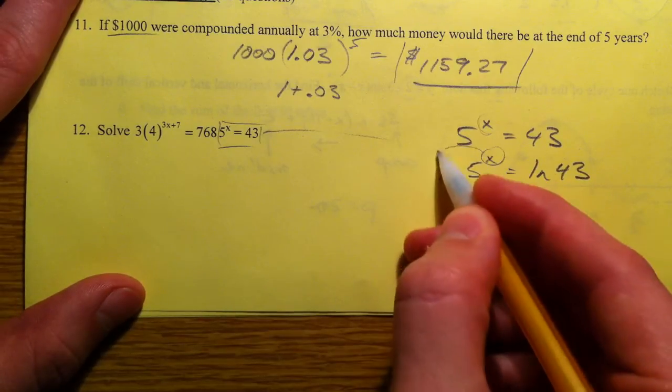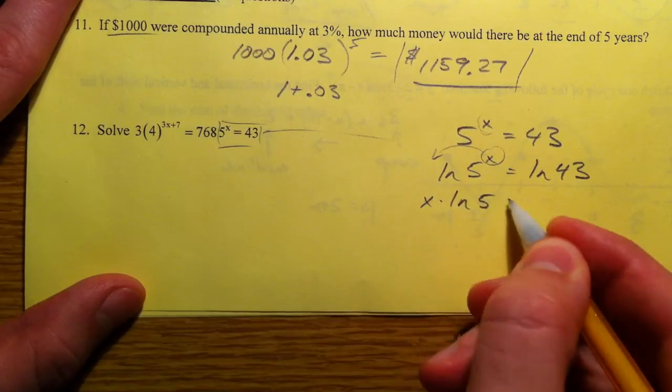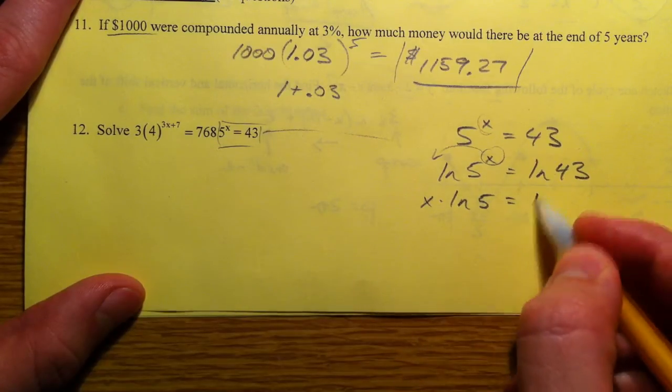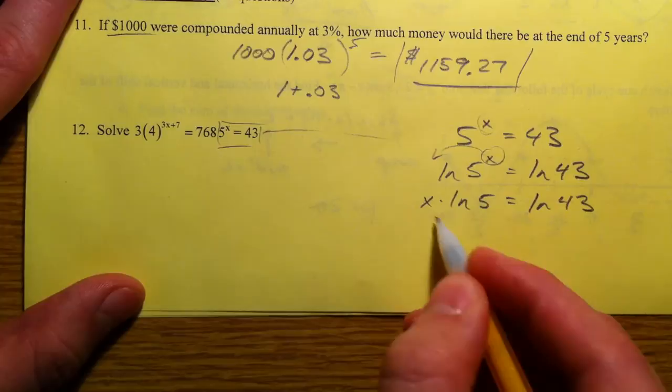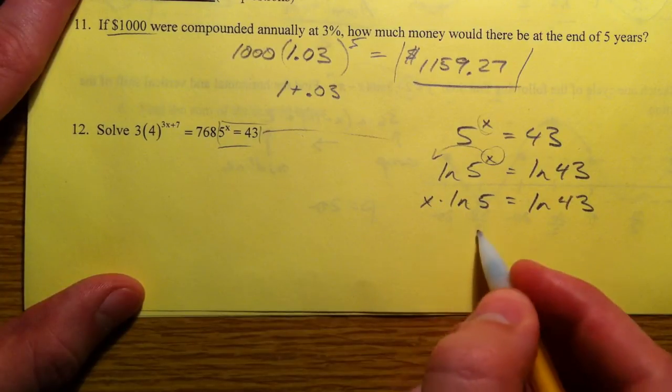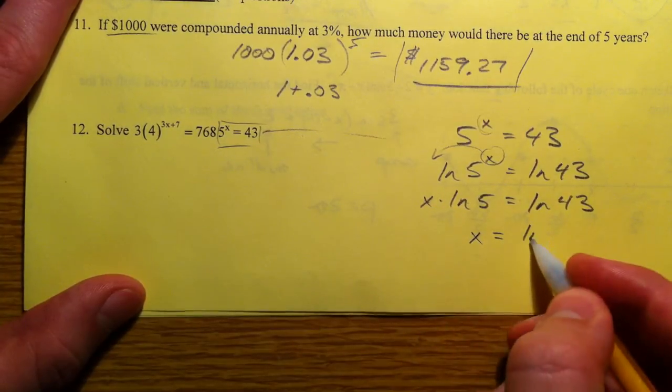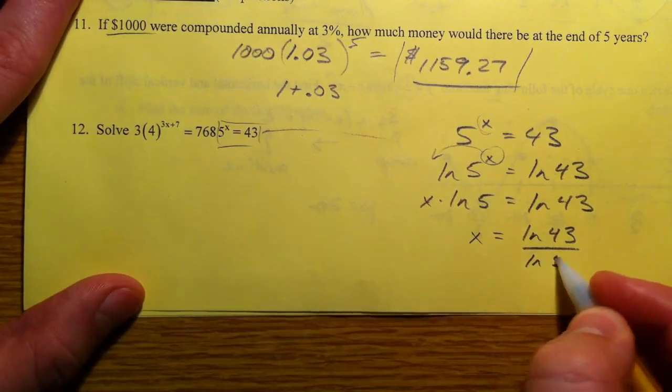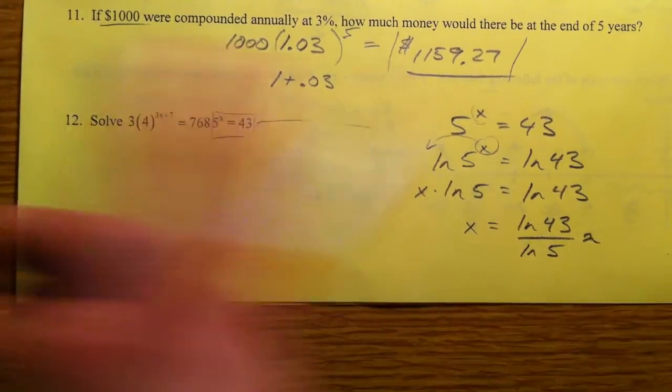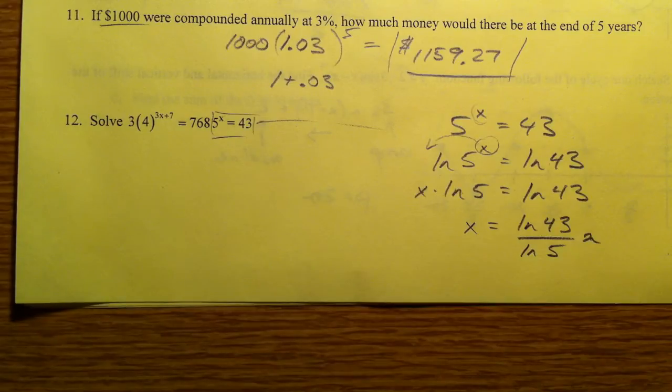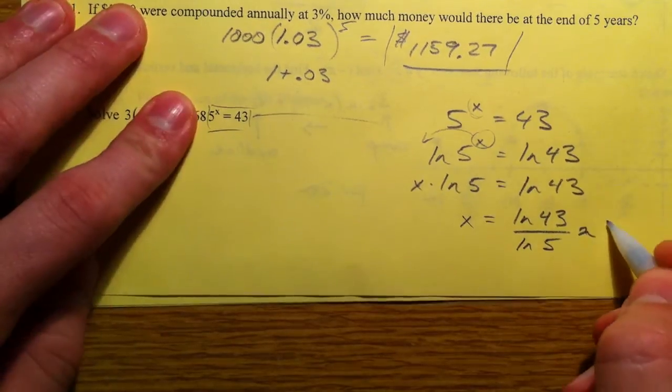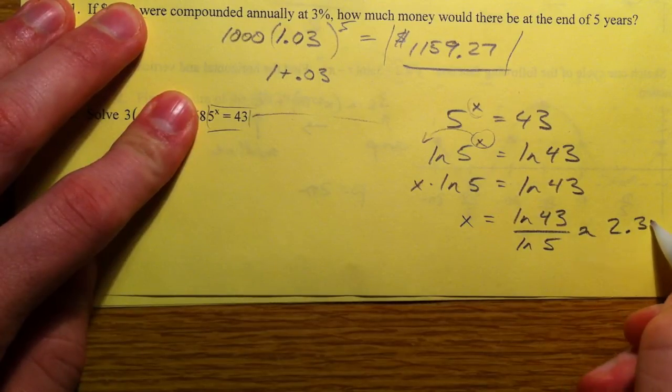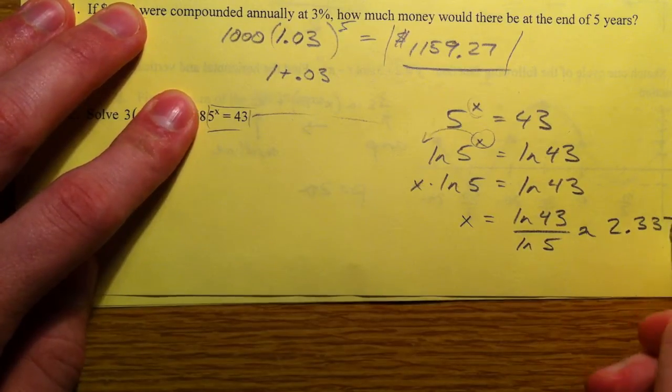Then you bring the x down in front, because that's that one property of logarithms. And then, because it's x times the natural log of 5, we divide both sides by the natural log of 5. And x is then approximately the natural log of 43. Make sure you close the parentheses on that.